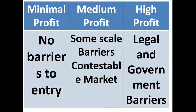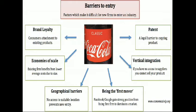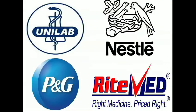In high profit, where monopoly falls, there are legal and government barriers. Since monopoly is the only one running this type of business, they should have the highest standards and the highest barriers to entry — including brand loyalty, economies of scale, geographical barriers, being the first mover, vertical integration, and patents. Examples of such corporations include Nestle, Unilab, Procter & Gamble, and RiteMed.